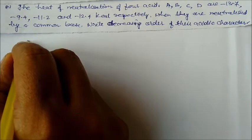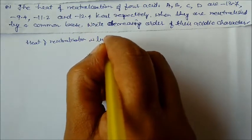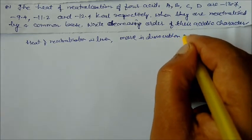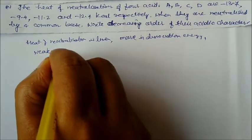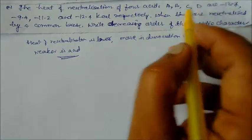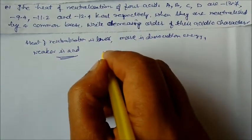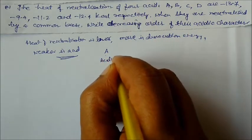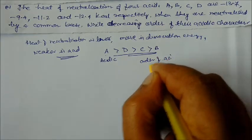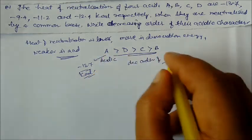If the heat of neutralization is lower, more is the dissociation energy and weaker is the acid. Lower heat of neutralization values are 9.4 (B), then 11.2 (C), then 12.4 (D), and 30.7 (A). So the decreasing order of acidic character is A > D > C > B, since A has the most energy and is most acidic.